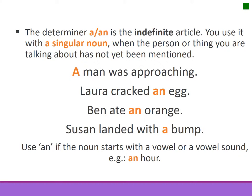The determiner a or an is the indefinite article. You use it with a singular noun when the person or thing you are talking about has not yet been mentioned. You use an if the following noun starts with a vowel or a vowel sound, for example, an hour.